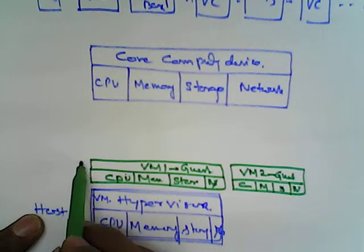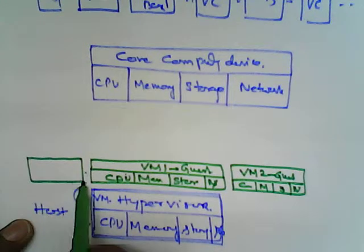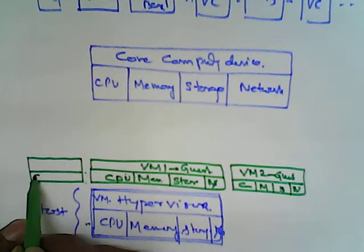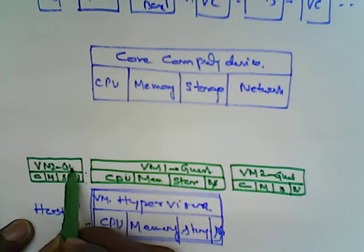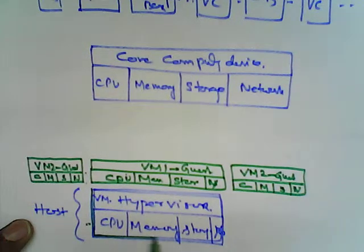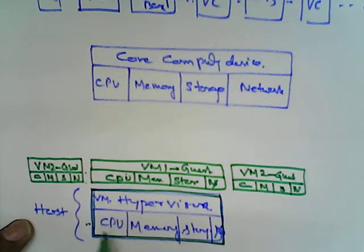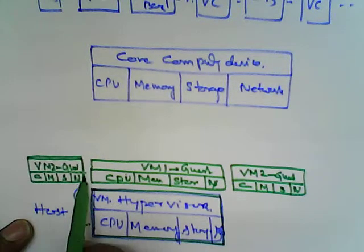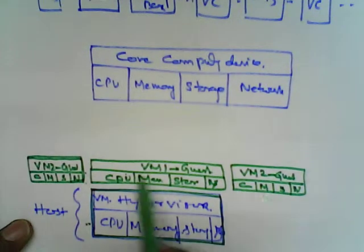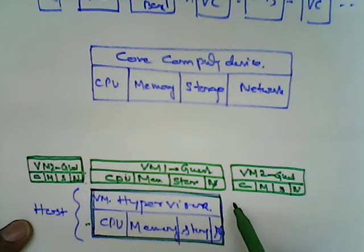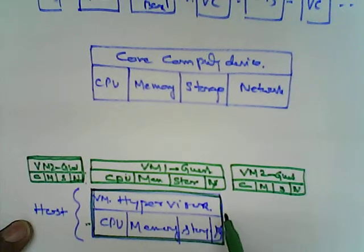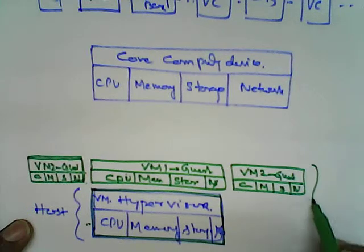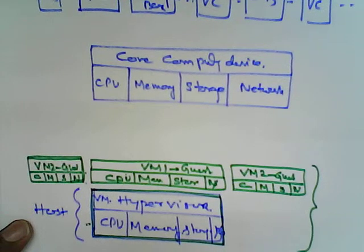Same way, we create another virtualization — CPU, memory, storage, and network — and VM3 for the guest. So what we have seen is that the main host, which is running a Windows operating system, on the top of which we created different virtual machines: one is running Ubuntu, another is running Ubuntu, another is running Fedora, and another is running Renex. So these three things running on the top of the main host — this particular technique is called virtualization.